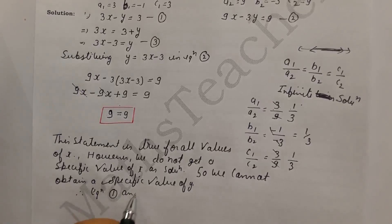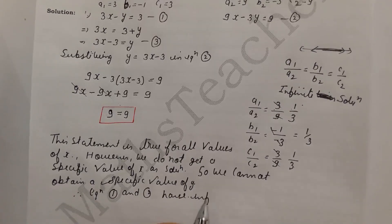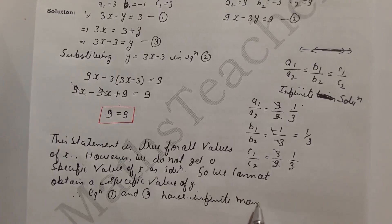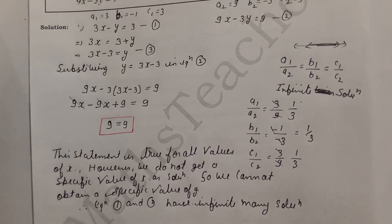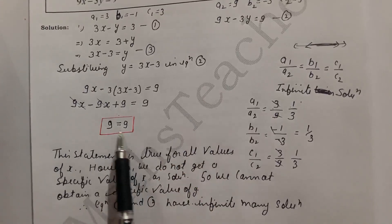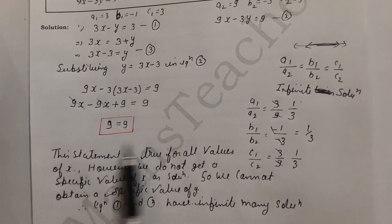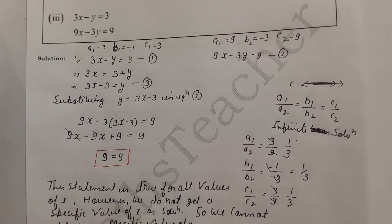Therefore, Equations 1 and 2 have infinitely many solutions. When the left side equals the right side and no specific variable value emerges, the lines are coincident and we do not get a unique specific answer. Thank you — if you have any doubts, please comment below.